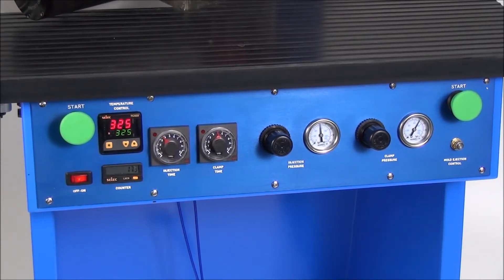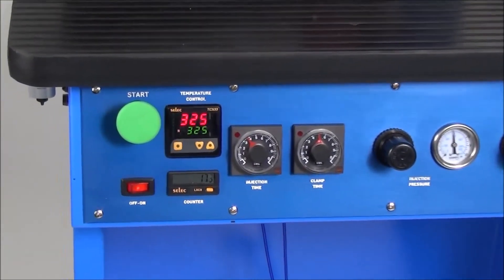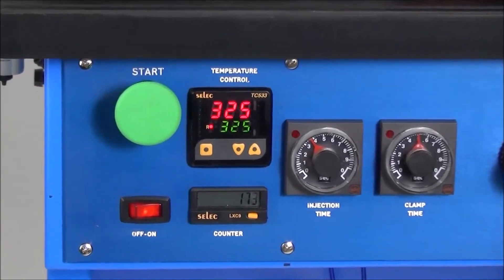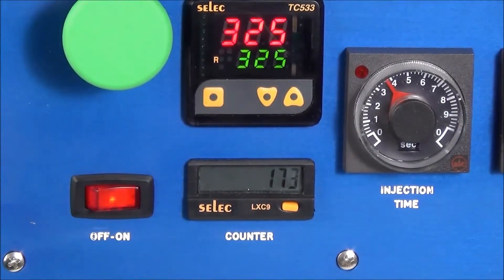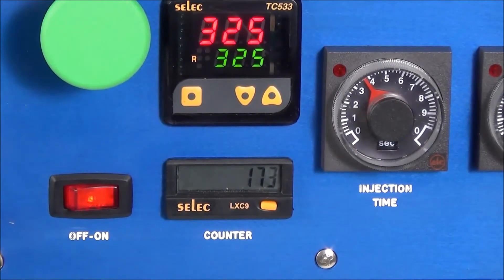Now let's take a look at the control panel. The on-off switch is located at the bottom left hand side of the control panel. To the right of the on-off switch the unit also features a built-in resettable production counter.